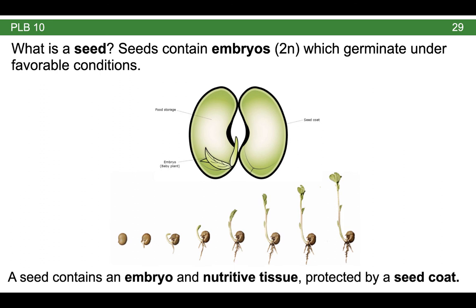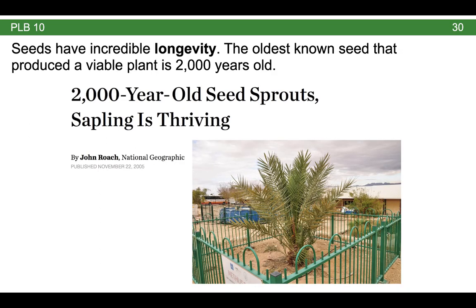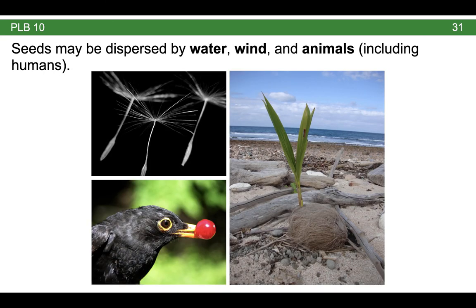Seeds are remarkable because they can germinate when conditions are just right. Recall that the seed contains not only that embryo and nutritive tissue, but it's also protected by a seed coat. So seeds can have remarkable longevity. This is a really good example of the longevity of seeds — this is one of the oldest known seeds that actually was planted and developed into a viable plant. And this was something that was found in an archaeological dig that was over 2,000 years old. With a little bit of care, that seed re-grew into a new adult plant. So seeds have incredible longevity. We're going to end by thinking about seeds and how they're dispersed. There are lots of different strategies used by seeds for dispersal. They include things like water in the form of a coconut, wind like a dandelion seed, and of course, animals like humans, which enjoy fruit, but sometimes consume seeds and then deposit them in new habitats.